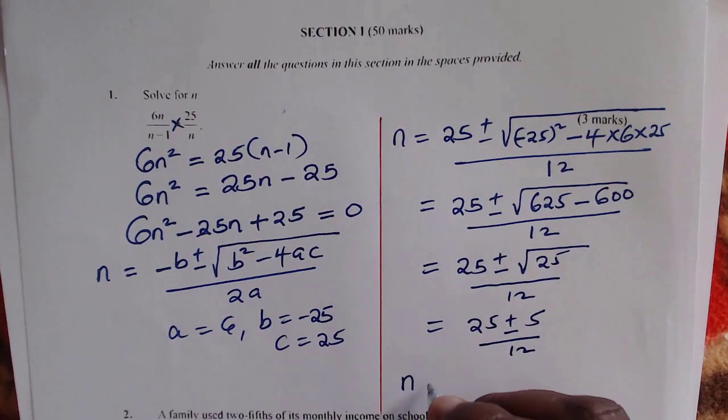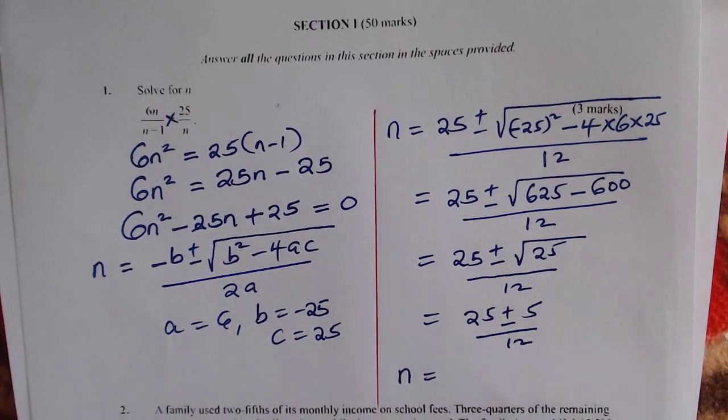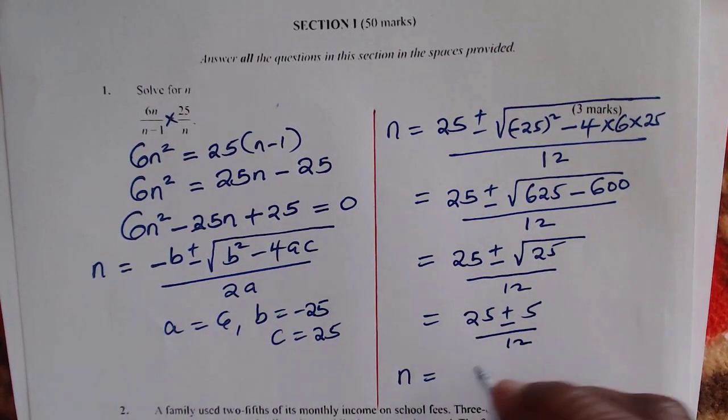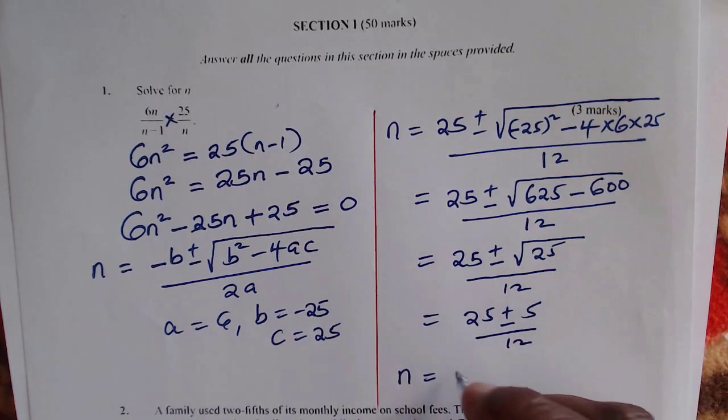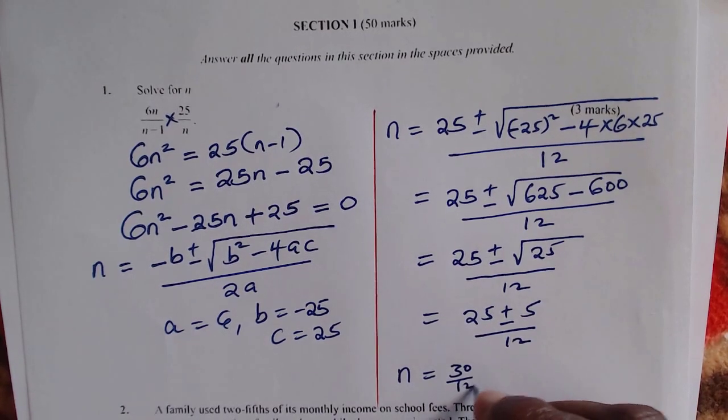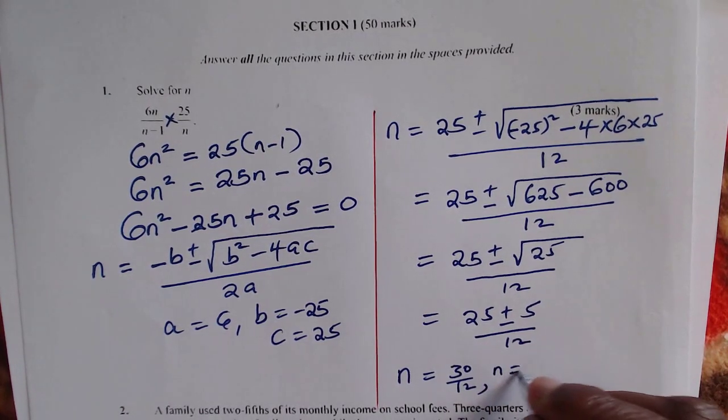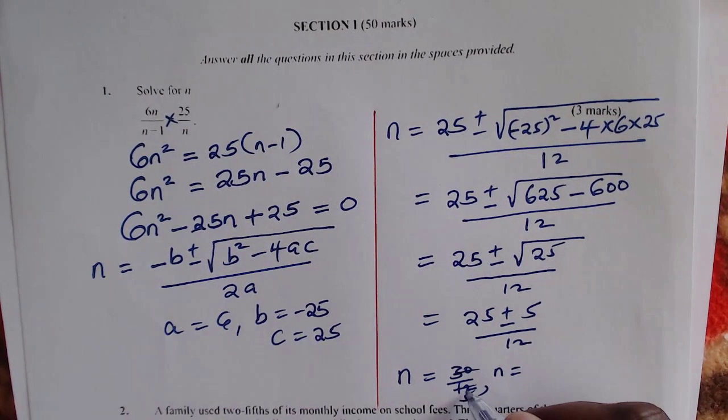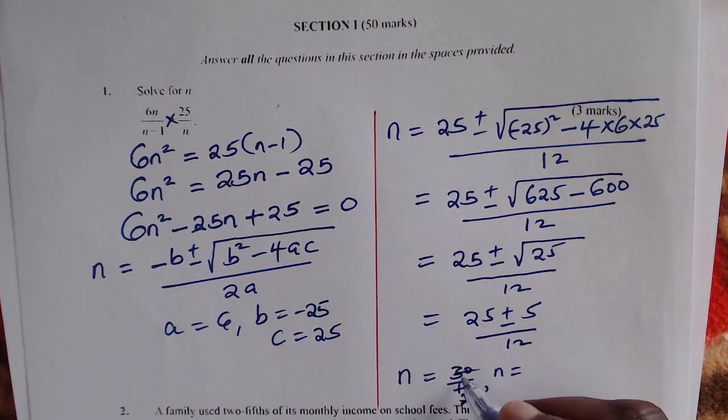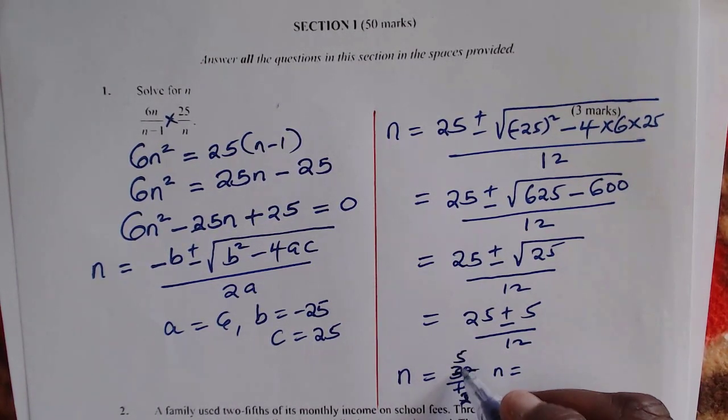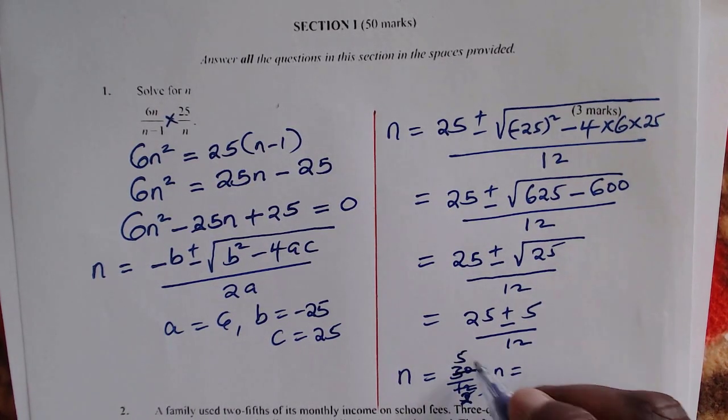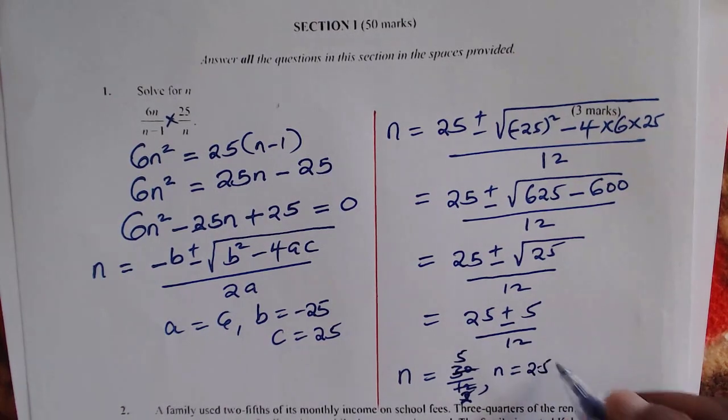So n will be given by, the first value of n, because you get 2, will give 25 plus 5, which will be 30 divided by 12. And this one, when you simplify it, divided by 6, you get... 30 divided by 6 is 5, and 12 divided by 6 is 2. So this will be 5 over 2, which is the same as 2.5, that is the first value.